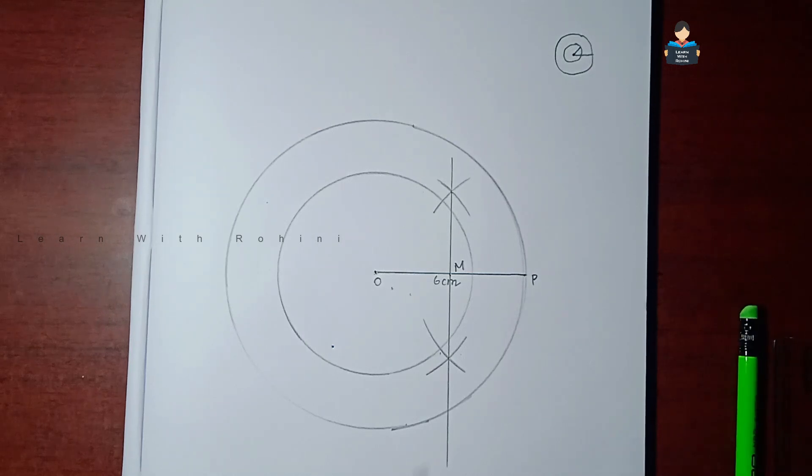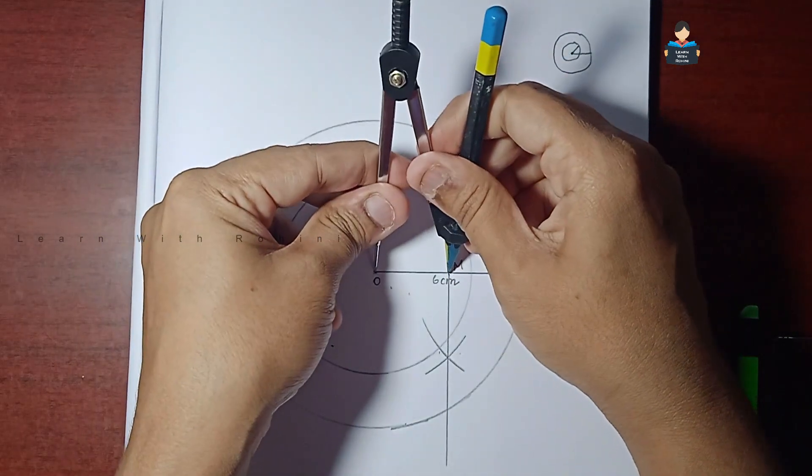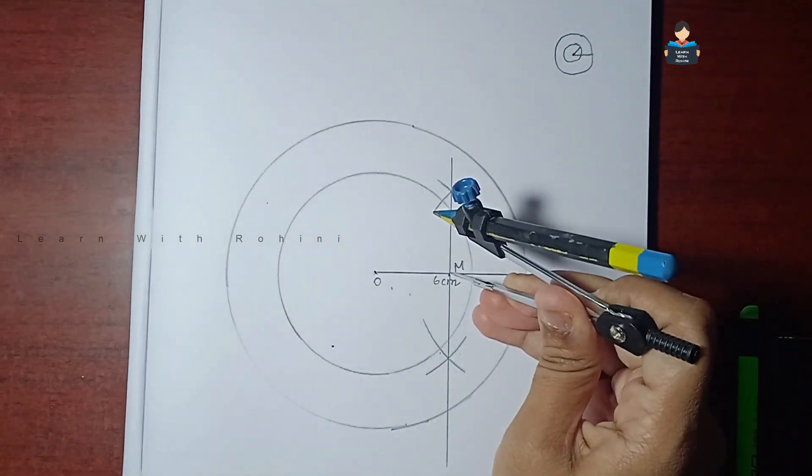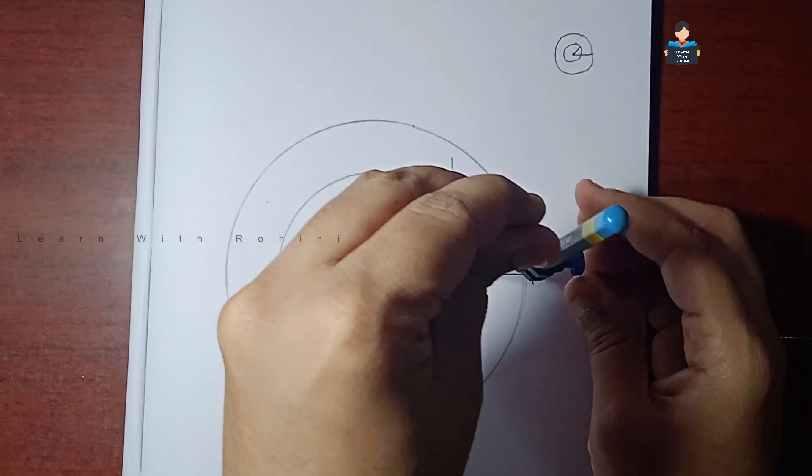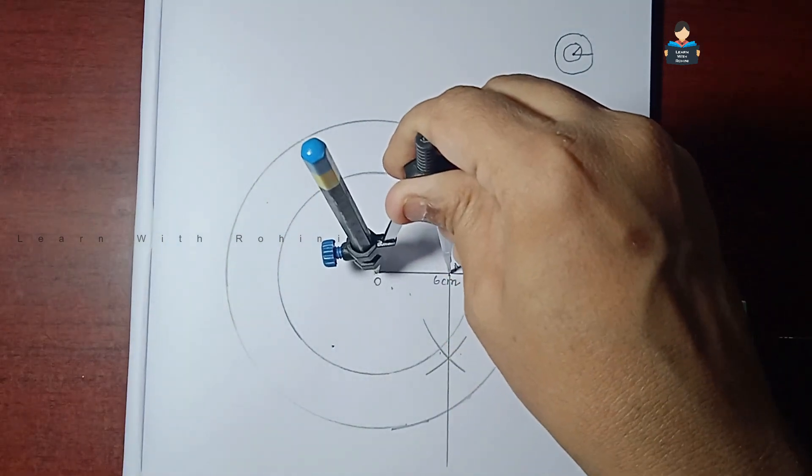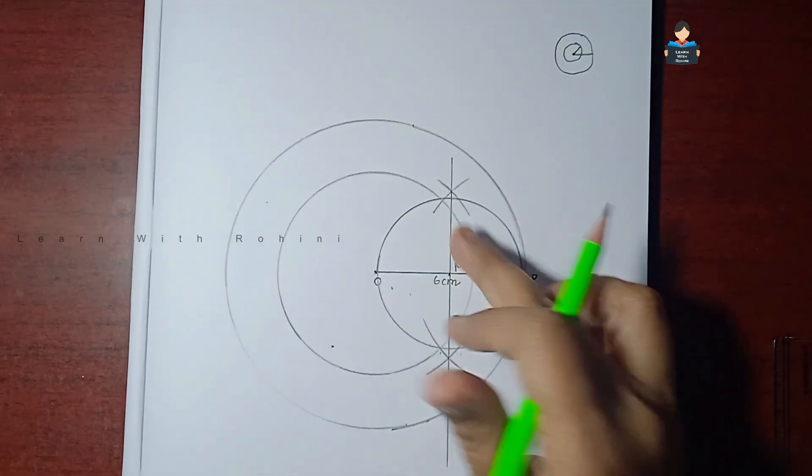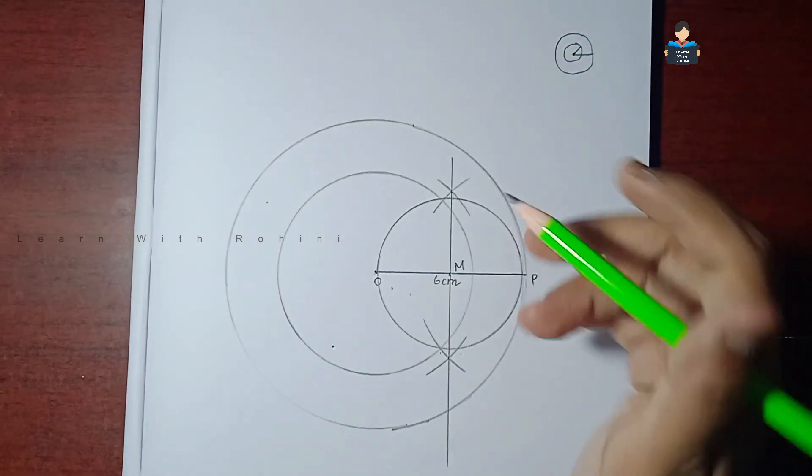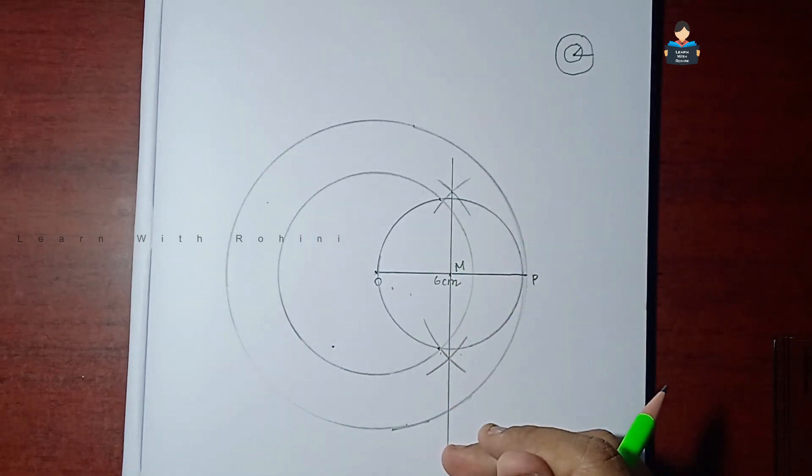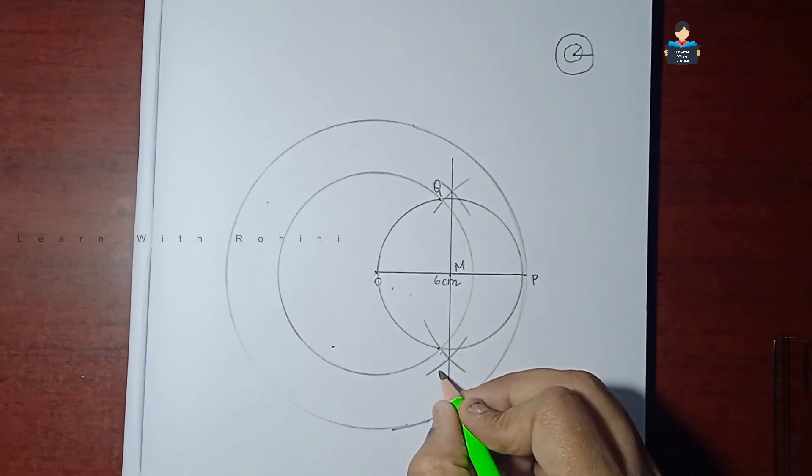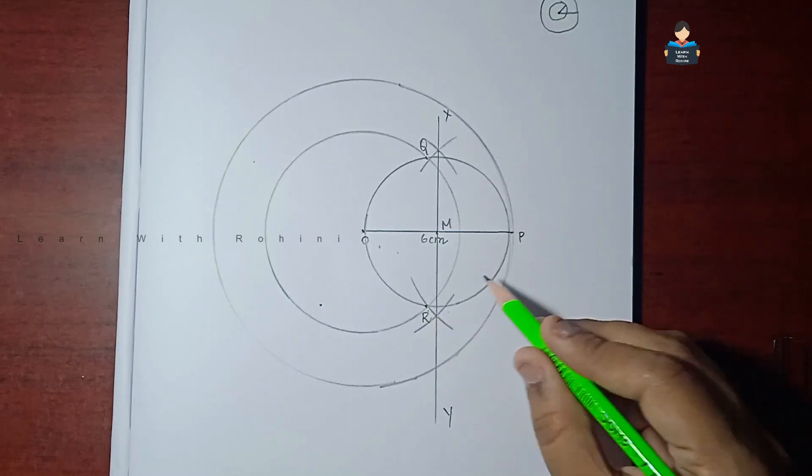Now OM will measure. That is, in the point O, we will measure the M point. M is the center point. That is the right point. Check this point. Check this one. Q and R. We mark this one. This is Q, this is R. This is PQ and PR. We join in the first sum.